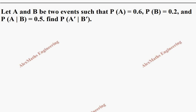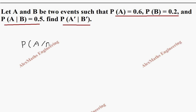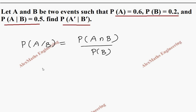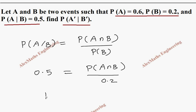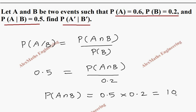In the next problem, they have given P(A), P(B), and P(A|B). We have to find P(A'|B'). Starting from P(A|B) = P(A∩B) / P(B): this value is 0.5, and P(B) = 0.2. By cross multiplication, P(A∩B) = 0.5 × 0.2 = 0.1.